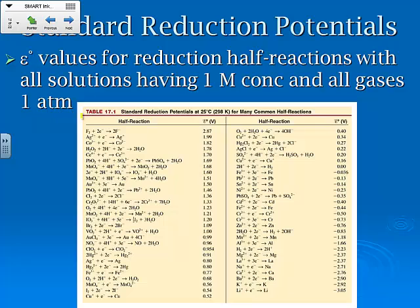Now this is your standard reduction potential values. This is table 17.1 in your textbook. You also have several of them on the back of the AP Chem Periodic Table. These are for half reactions, all of these solutions having one molar concentration and the gases being at one atm, and at 25 degrees Celsius or 298, which is our typical standard conditions.